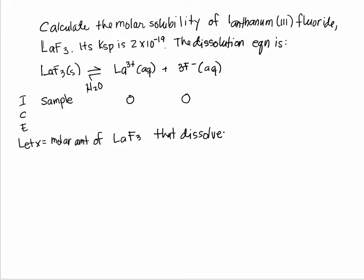And that's what we're looking for: X is the molar solubility. So this is X, and now we use the balanced equation. For every one LaF3, you produce one La³⁺ and three F⁻. So if X amounts of LaF3 are dissolved, that means X amounts of La³⁺ are formed and three X amounts of F⁻ are formed because it's one to one to three.